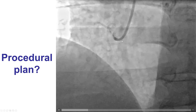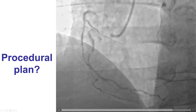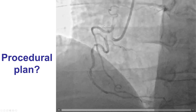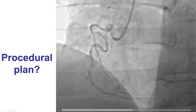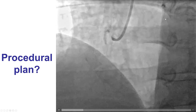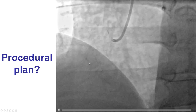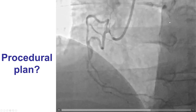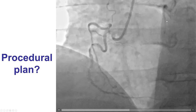Looking at this right coronary artery, it becomes immediately apparent that this is likely going to be a complex intervention, mainly because of the severe tortuosity of the right coronary artery, but also because the right coronary artery is supplying the left anterior descending artery, which is occluded. Therefore, compromising the flow in the right could have a significant impact on the perfusion of the LAD and potentially precipitate hemodynamic collapse.